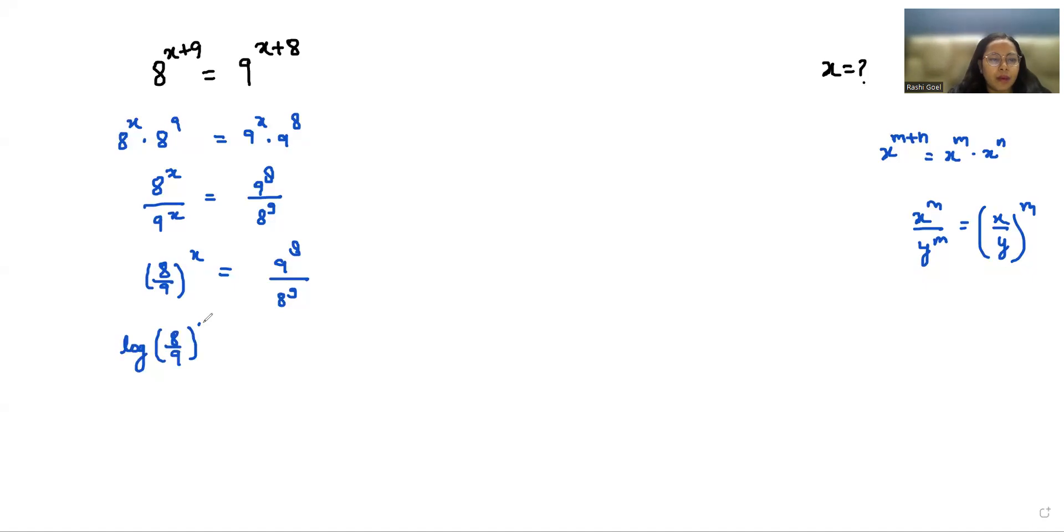So log 8 by 9 whole power x equals log of 9 power 8 by 8 power 9. Now x times log of 8 by 9 equals the right side.